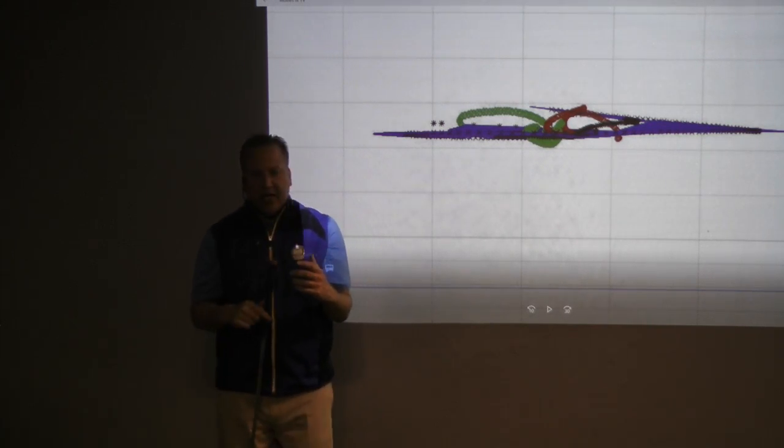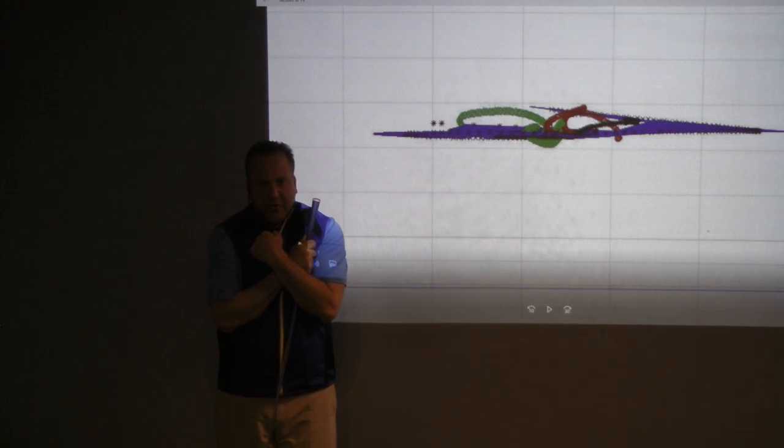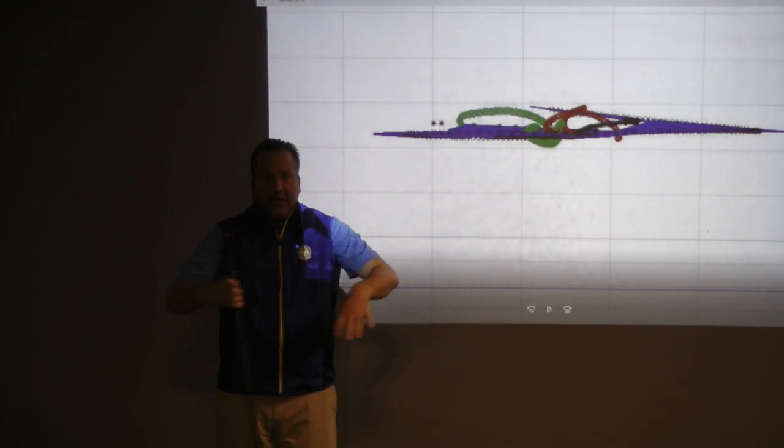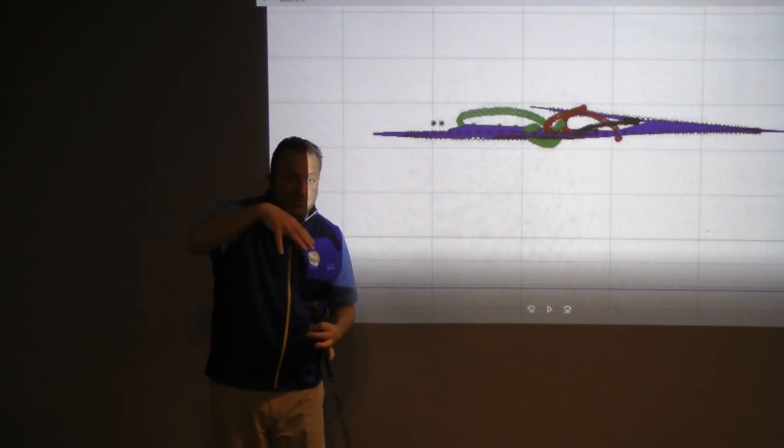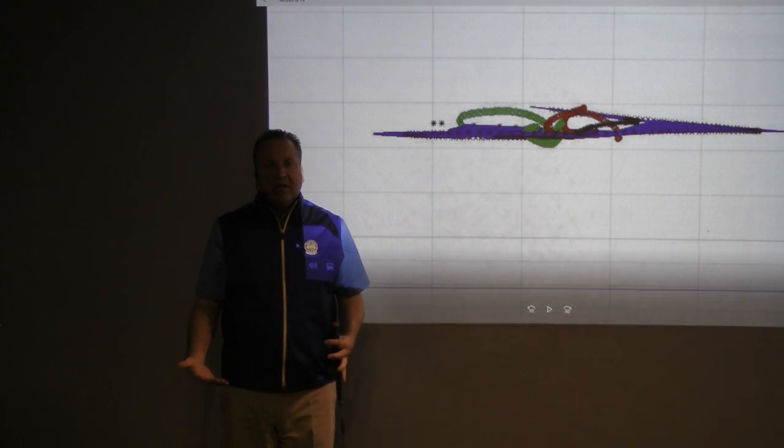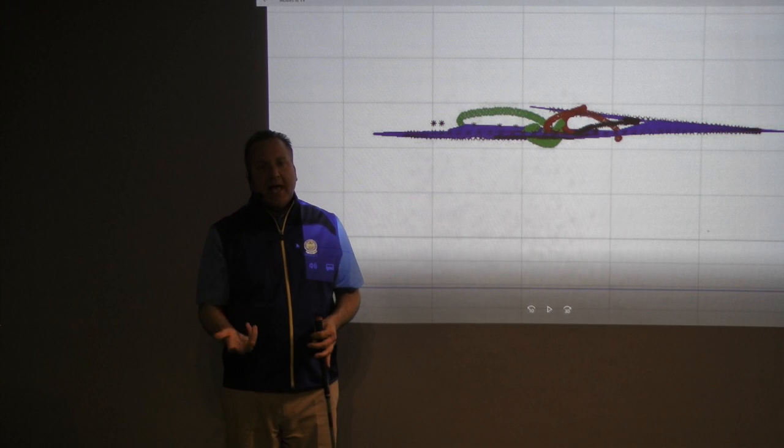And if you think of a figure skater for a second and they're spinning around like this, they're going fast. They don't try to slow down then, they just put their arms out and they end up slowing down. And that's a similar phenomenon you want to have in your downswing.